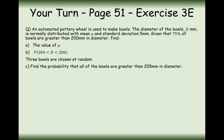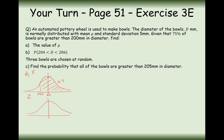An automated pottery wheel makes bowls. The diameter d in millimetres is normally distributed with unknown mean mu and standard deviation 5. Given that 75% of the bowls are greater than 200 mm, find the value of mu. Draw two sketches: one of the X distribution (with 200 and above having probability 0.75) and one of the standard normal (mean 0, standard deviation 1).